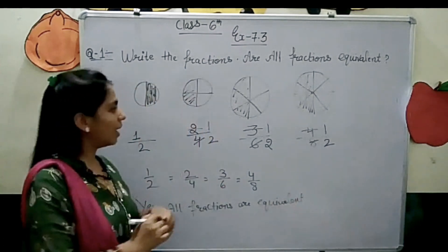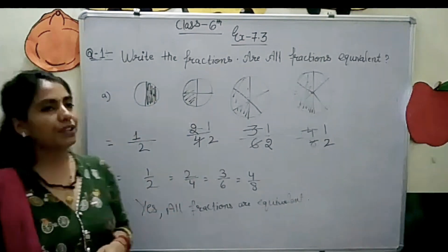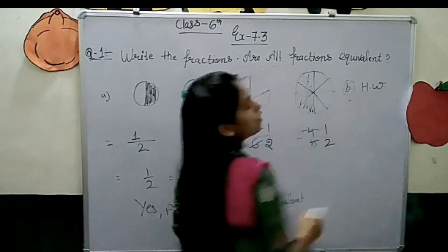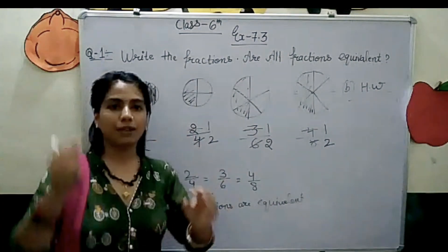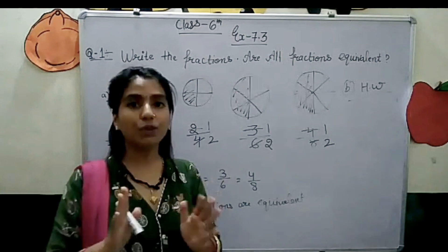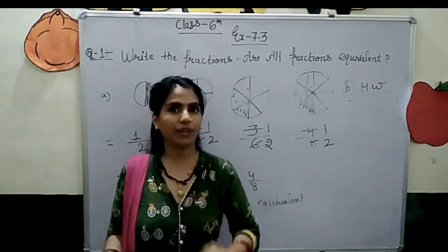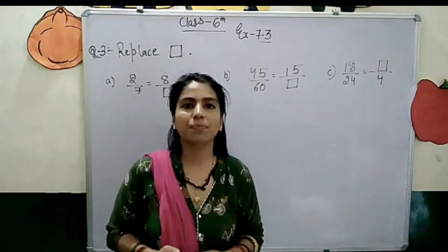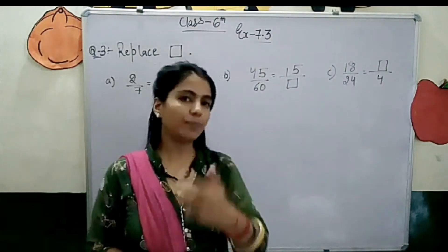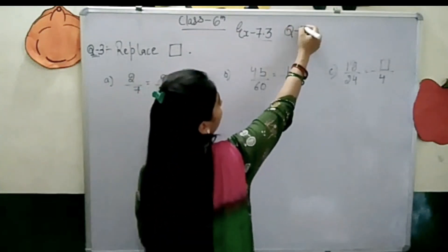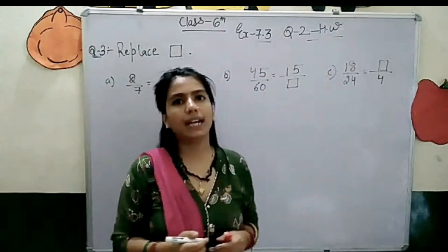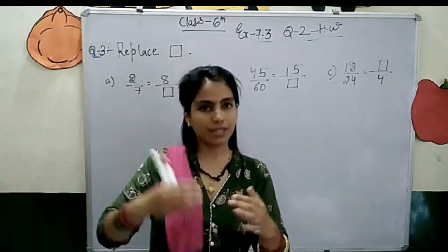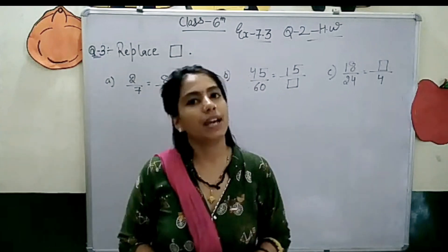That's it — we have found the equivalent fractions. The B part will be homework for you. You have some figures and holes in it — see from the book. Whenever you are going to do maths work, just open the book in front of you. This is all about question number 1. Moving to question number 2, which is also in figure form, so that will also be homework for you. You have to match the figures to check if they are equivalent or not.